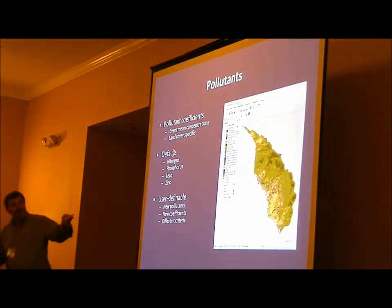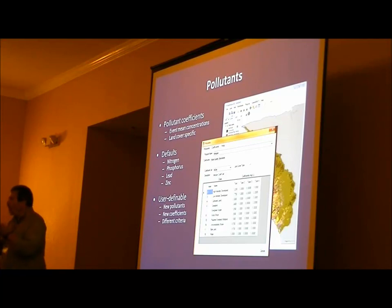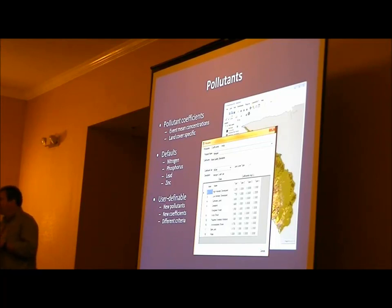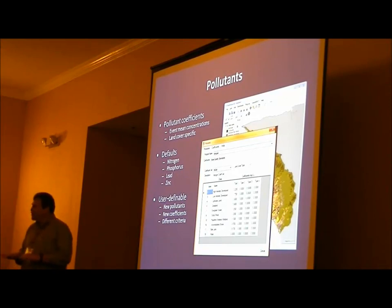For pollutants, here are our different land covers, each of which for a particular pollutant has what I call the magic number — the event mean concentration (EMC). This is the concentration that comes off of that land no matter how much water is coming off. It ignores the time dependency of the first flush from a storm and doesn't care how long ago the previous storm was. That's one of the reasons why it's good to run this on an annual basis.